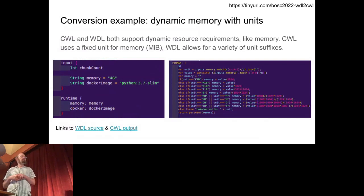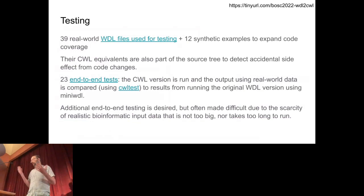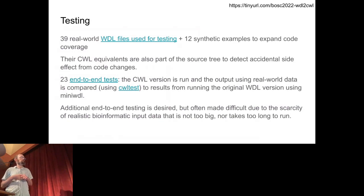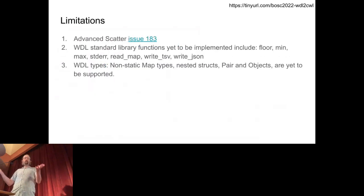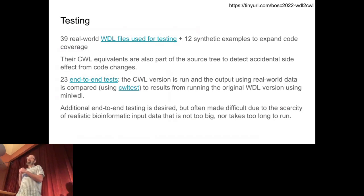Currently we have 39 real-world WDL files plus 12 synthetic examples checked into our code base that are tested. We check in the CWL equivalents to see how code changes might affect things. For many of these we have end-to-end tests where we found sample input data, ran it with mini-WDL, ran it with the converted version, and checked that outputs are identical. Finding bite-sized small test data that doesn't take forever to run is a nice challenge for the whole bioinformatics community.